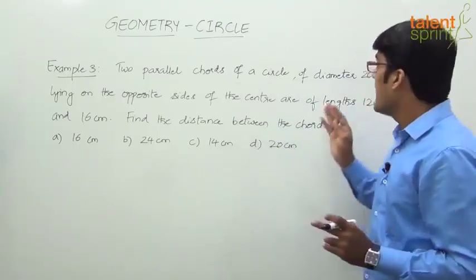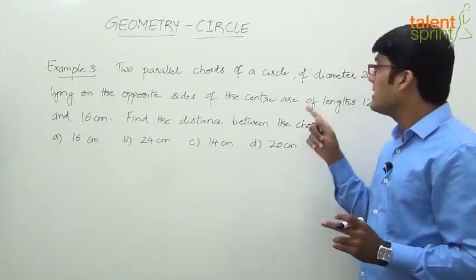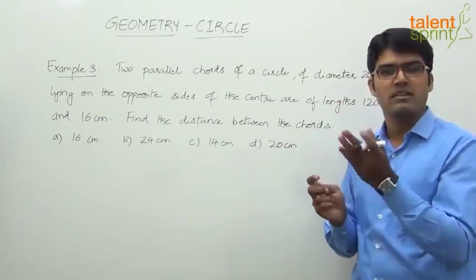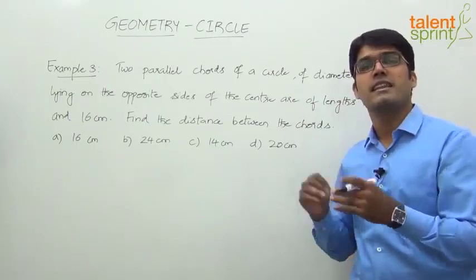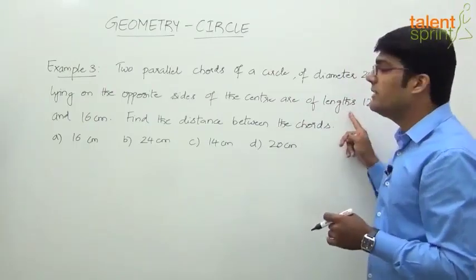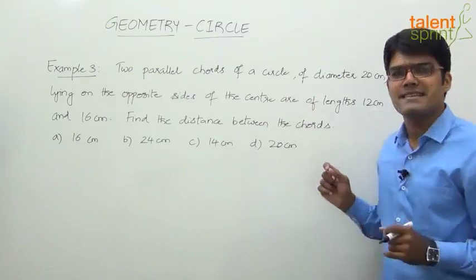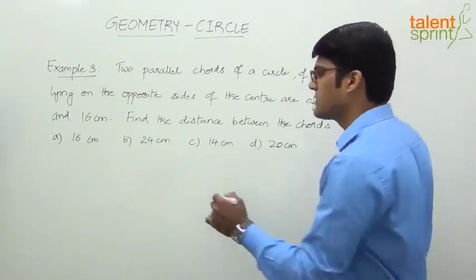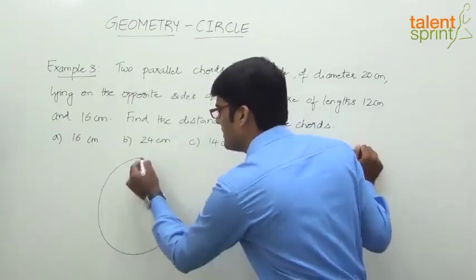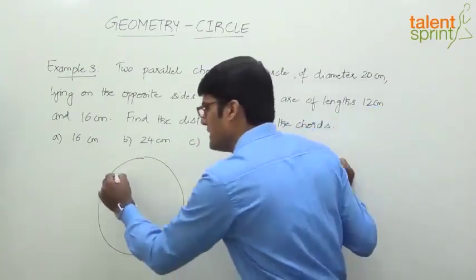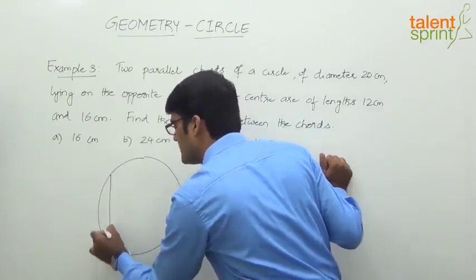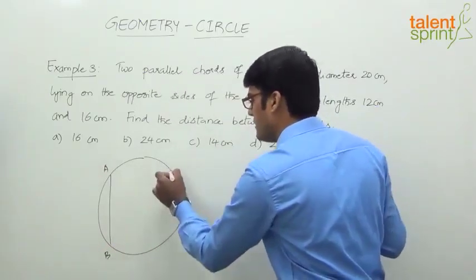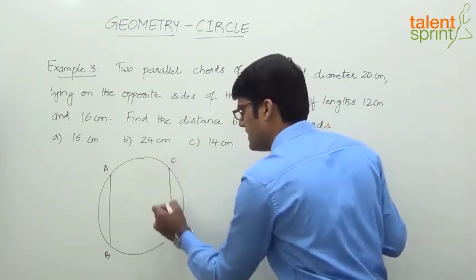What is given: there are two parallel chords in a circle with a diameter of 20 centimeters, and they lie on opposite sides of the center — one on the left side and the other on the right side. The lengths of these two parallel chords are 12 centimeters and 16 centimeters. Let's construct the diagram properly. This is the circle, and the two chords are AB and CD.